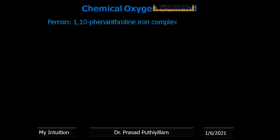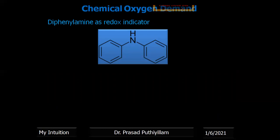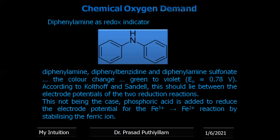Ferroin, that is the 1,10-phenanthroline iron complex, is one of the best indicators for redox titrations, as already explained in the nitrate estimation in this series. Diphenylamine, diphenylbenzidine, and diphenylamine sulfonate can also be used as indicators, giving a color change from oxidized to reduced state — green to violet. The standard reduction potential for this conversion is 0.78 V. According to Kolthoff and Sandell, there must be a potential difference between the two chemicals undergoing reduction. In the case of iron, this may not hold, so phosphoric acid must be added to stabilize Fe3+.